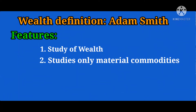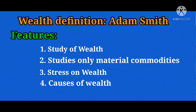An important point is that free goods like air, sunshine, and water are not wealth because they do not possess scarcity. The next characteristic is stress on wealth — according to Adam Smith, the main aim of political economy is to increase the wealth of the economy, so it gives more stress on wealth and nothing else. Next is causes of wealth: economics is considered a study of the causes of wealth accumulation which brings economic development. When wealth accumulates, economic development takes place, so production of material goods must be increased.